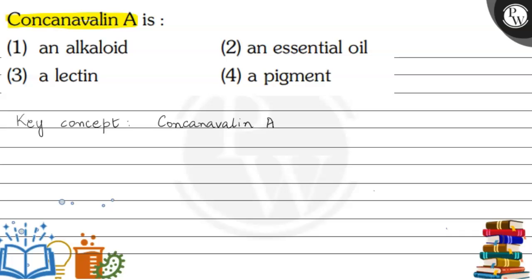This is a difficult question. Let's begin by understanding the key concept. Con Canavalin A is a protein — it is a four-subunit protein which is derived from the Jack Bean.